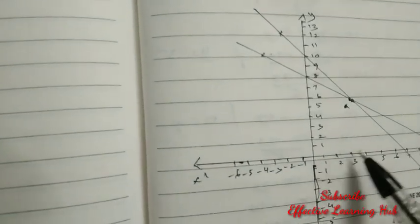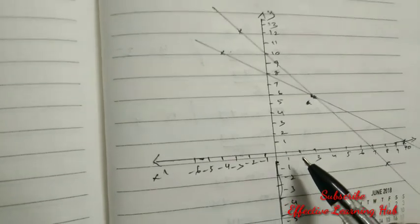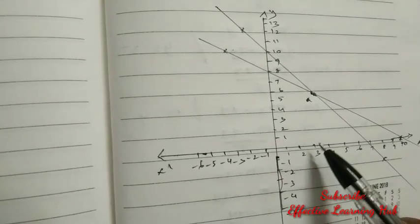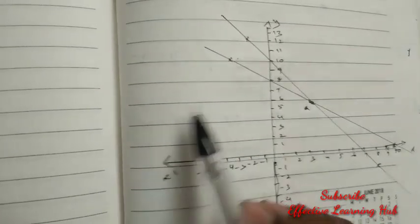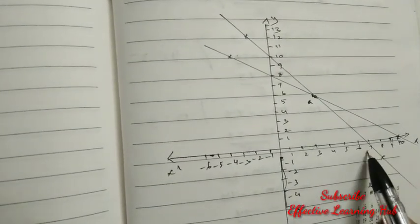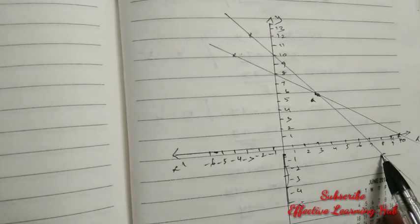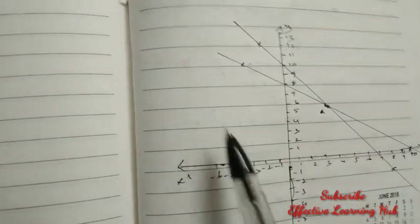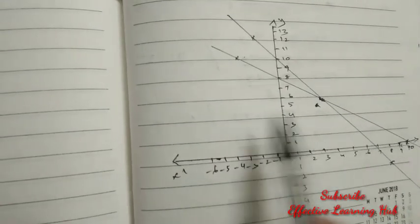Now see the graph. Mark x-axis, x-dash, y, y-dash. 1 unit equal to 1 centimeter. For equation 1, plot points (10,0), (minus 2, 12), (3,5). For equation 2, plot points (minus 4,10), (3,5), (8,2). Join the lines. The intersection point (3,5) gives the solution: cost of 1 pencil equals Rs. 3 and cost of 1 pen equals Rs. 5.